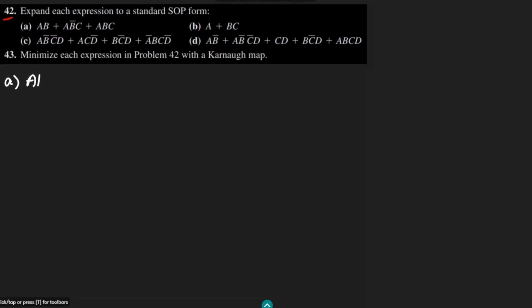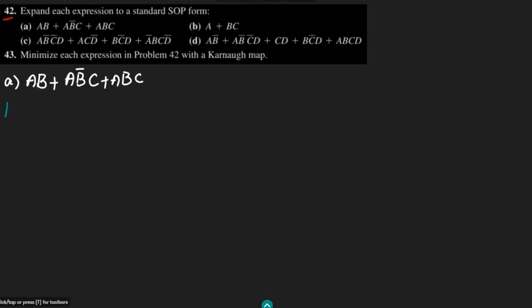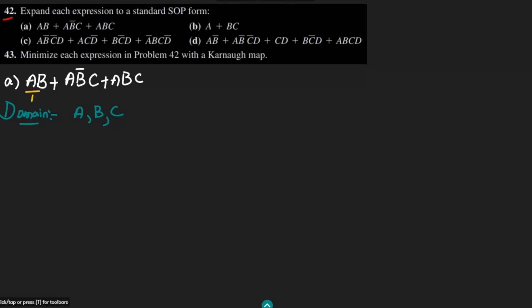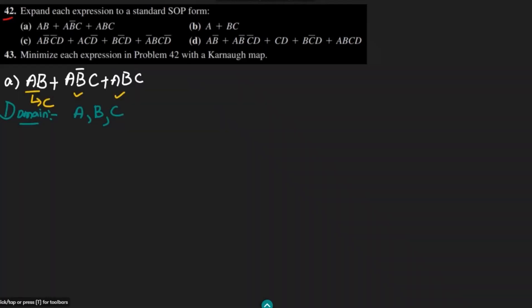In part A we have ab + ab'c + abc. The domain of this expression is a, b, c. We can see that there is a deficiency of C in the first term, while the other terms are complete. In order to fix this, we need to multiply by C + C complement, because this equals 1.